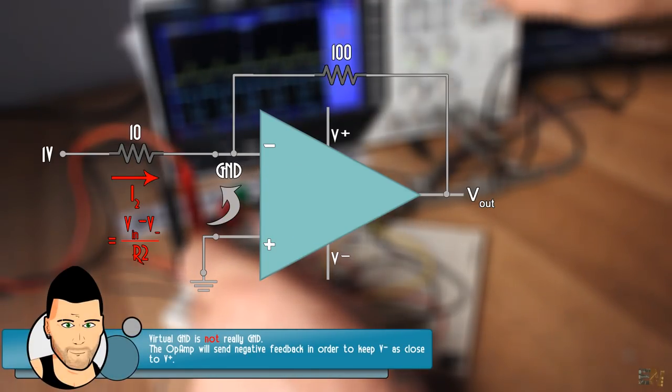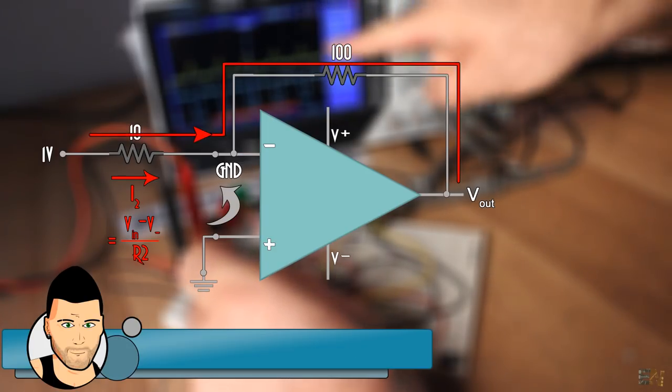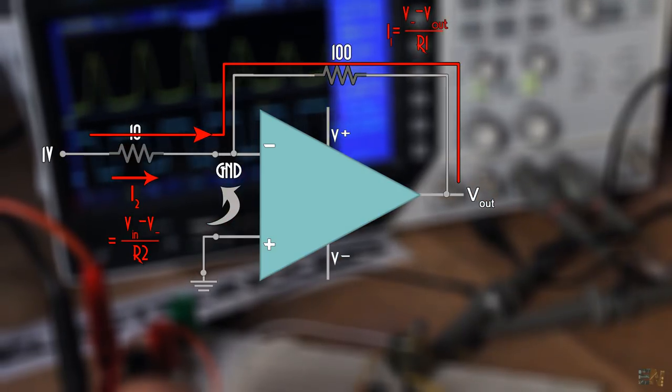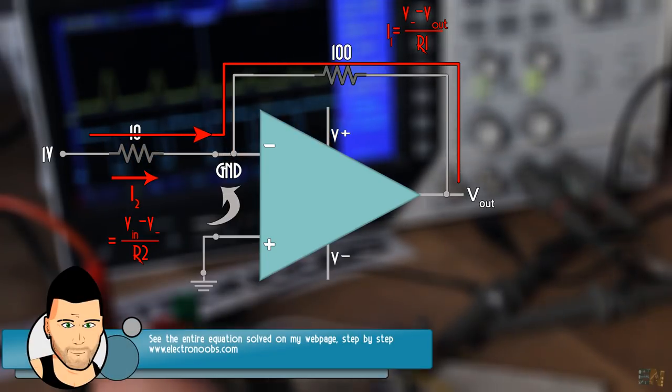Since no current could flow towards the op amp, the only route that the current could take is through the negative feedback rail. This current value could also be expressed like the difference between the negative pin and the output divided by R1. Since the negative input is ground, all we are left with is that the output divided by R1 is the current value.